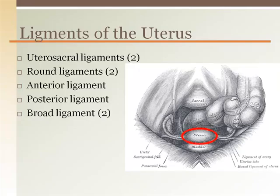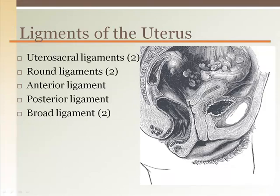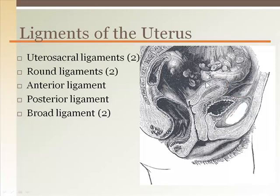The uterosacral ligaments connect the posterior surface of the uterus to the sacrum; there are two, attaching on either side of the rectum. The round ligaments go from the anterior part of the uterus down through the inguinal canal to the inner region of the external genitalia. The anterior ligament is a peritoneal fold from the anterior uterus over to the back of the bladder, forming the vesico-uterine pouch or anterior cul-de-sac. The posterior ligament is a sheet of peritoneum from the uterus to the rectum, called the recto-uterine pouch or posterior cul-de-sac of Douglas. The broad ligament also holds the uterus, ovaries, and uterine tubes.